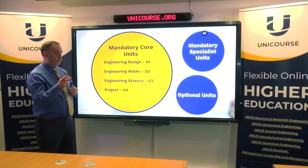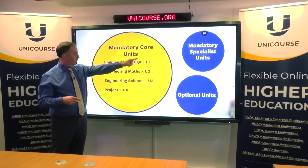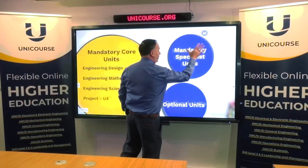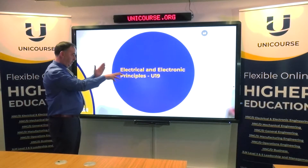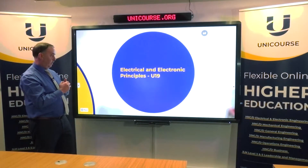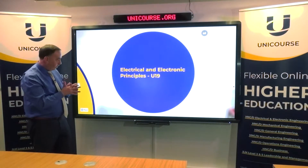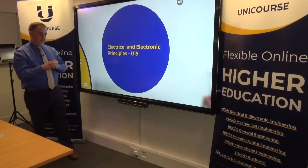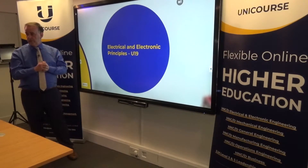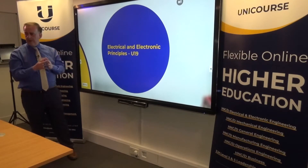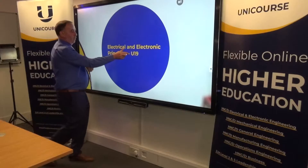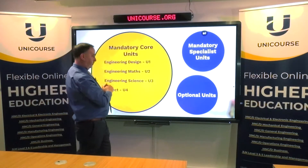We also have something called mandatory specialist units. Depending on which route you take — and you may already be on this route — you have to do Unit 19: Electrical and Electronic Principles. It's really fundamental to this particular specialism and route for engineers.